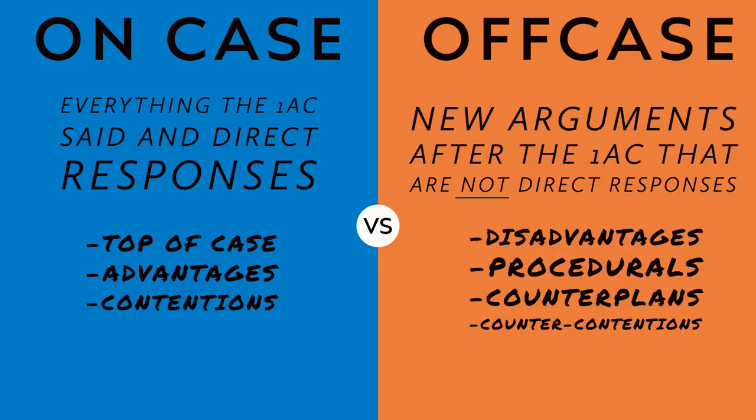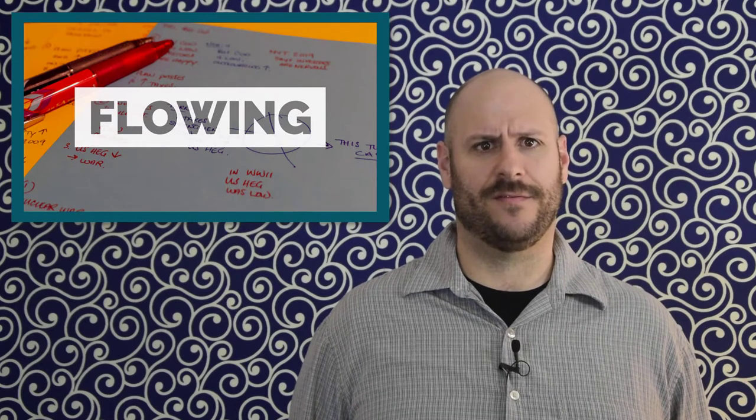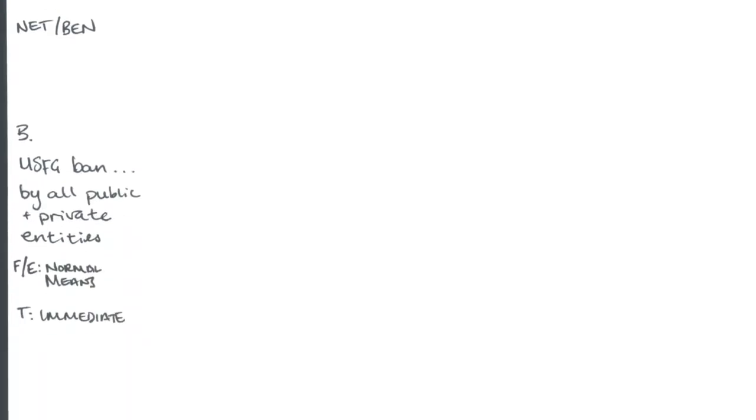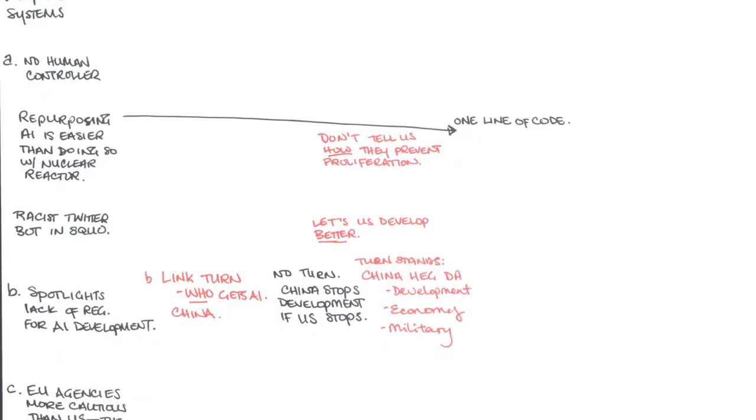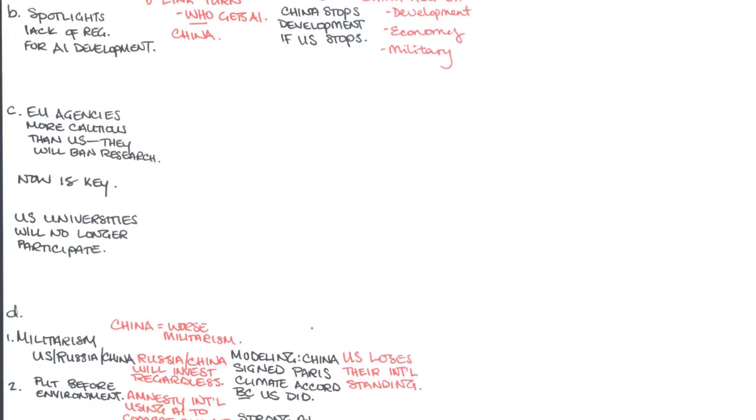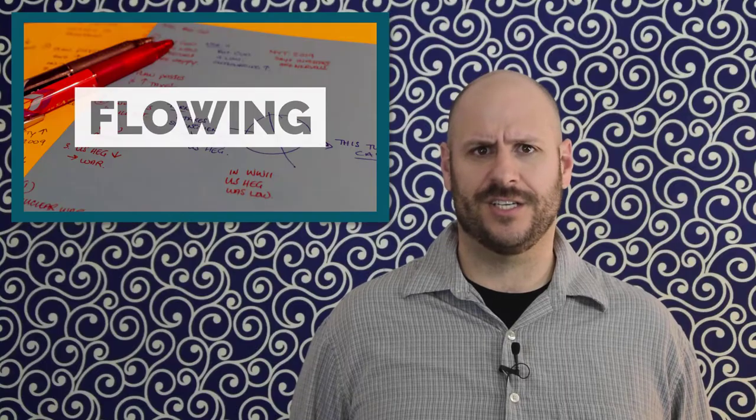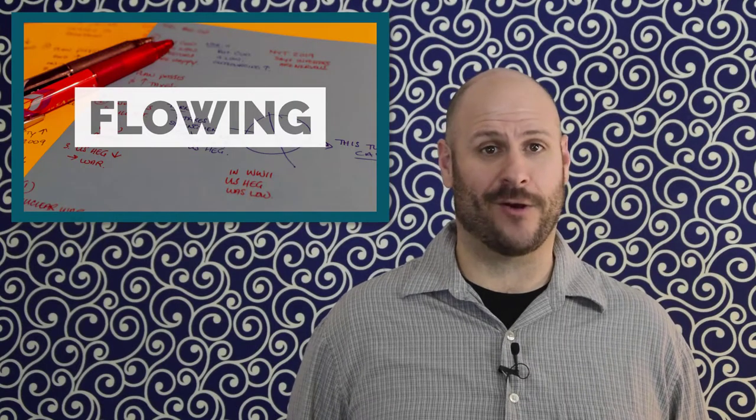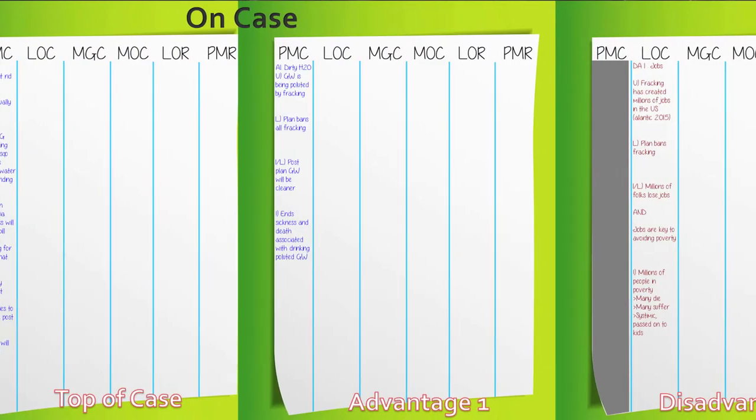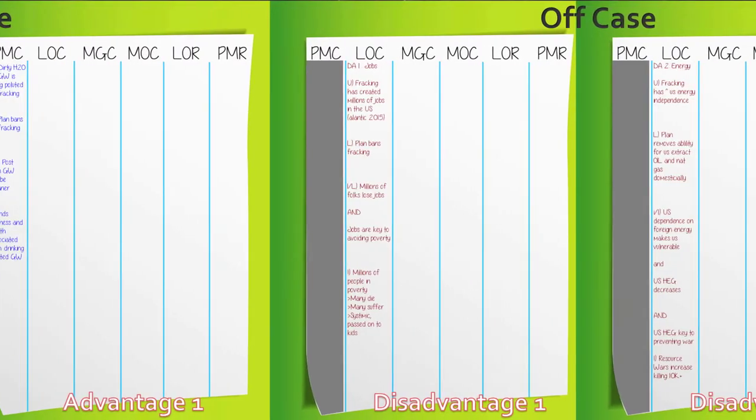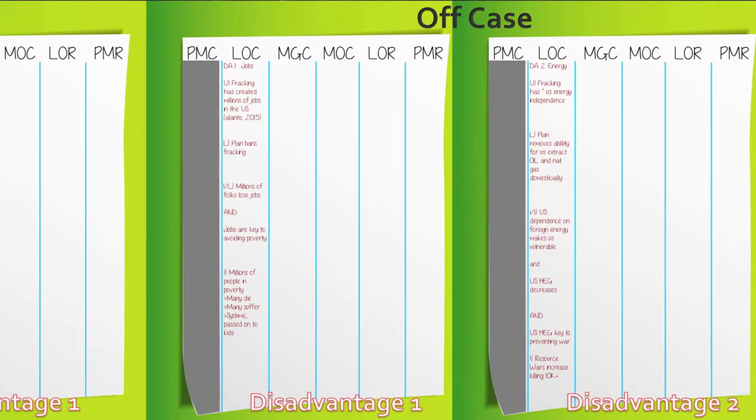For your typical policy case, you can expect that the affirmative will have a top-of-case, which includes framework arguments, their plan, and perhaps some solvency. They will also provide two to three advantages supporting their plan. In response, the negative will read a combination of disadvantages, procedural arguments, and occasionally a counter-plan. You should allocate a separate sheet of paper to each of these arguments, meaning the top-of-case gets a sheet, each advantage gets a sheet, and each disadvantage, procedural, or counter-plan gets a sheet.